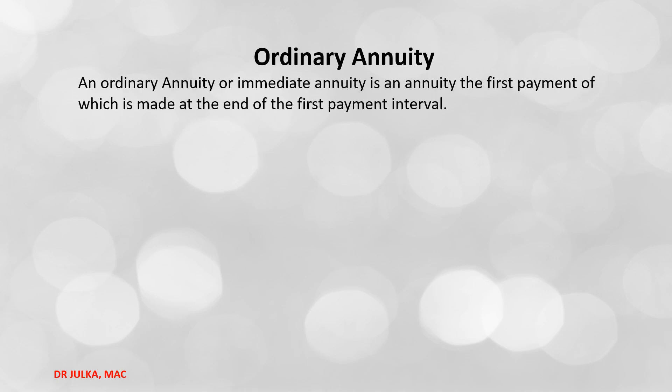What do you mean by ordinary annuity? An ordinary annuity is a series of equal payments made at the end of consecutive periods over a fixed length of time. Please remember, an ordinary annuity is also known as a budget annuity. It is an annuity, the first payment of which is made at the end of the first payment interval. And this interval may be monthly, semi-annually, quarterly, or annually.